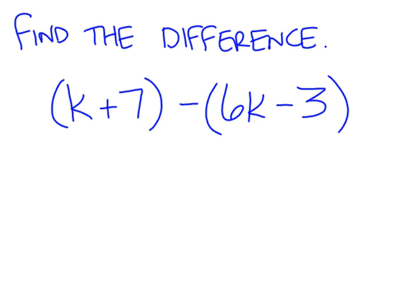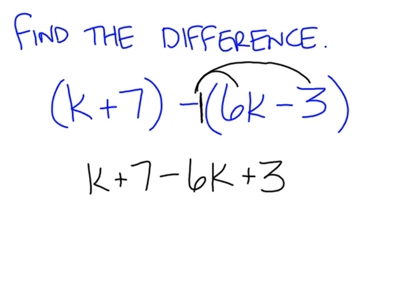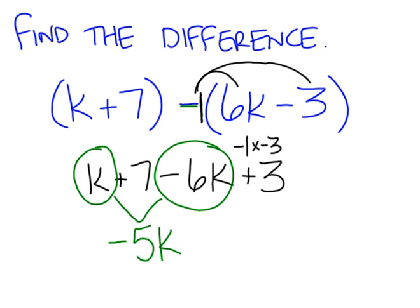Next, find the difference. One important thing: make sure you are distributing the negative. I drew in a negative 1 to help remind you of that. So we have k plus 7, then negative 1 times 6k is negative 6k, and negative 1 times negative 3 is positive 3. That's one of the most common mistakes — when you have a subtraction symbol in front of parentheses, you need to distribute it. Then 1k minus 6k is negative 5k, and 7 plus 3 is positive 10. So we get negative 5k plus 10.